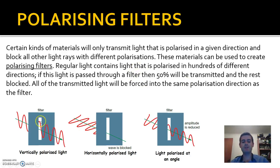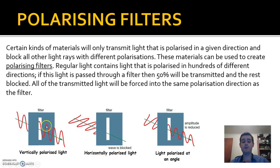Here's a visual picture of what's happening. You can imagine the filter as a hole that light can pass through, and the light waves can only fit through that hole if they're polarized in the vertical direction. So vertically polarized light will pass through a vertical filter. On the other hand, if you try to pass horizontally polarized light through a vertical filter, that light wave can't fit through and it'll be blocked.